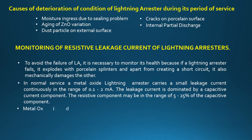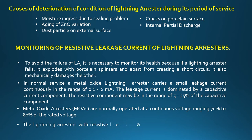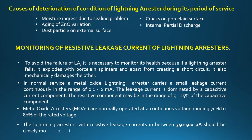Metal oxide arresters are normally operated at a continuous voltage ranging from 70 to 80 percent of rated voltage. Lightning arresters with resistive leakage currents between 350 to 500 microampere should be closely monitored, and those beyond 500 microampere should be replaced after due testing.